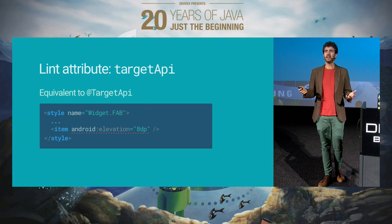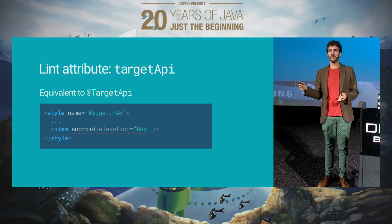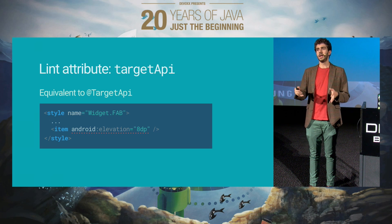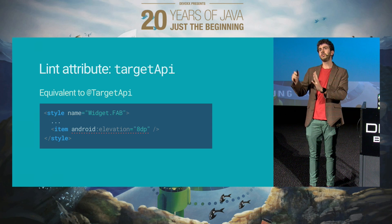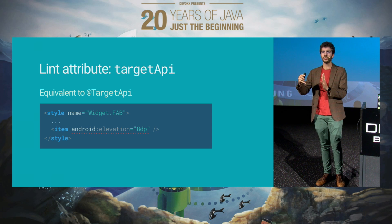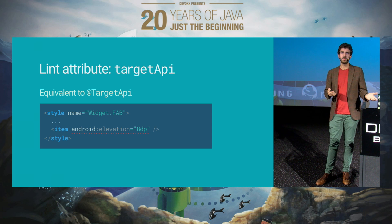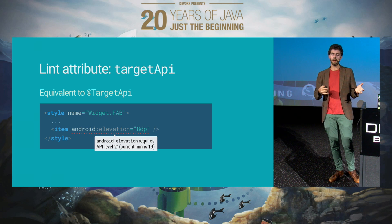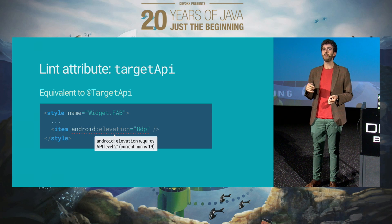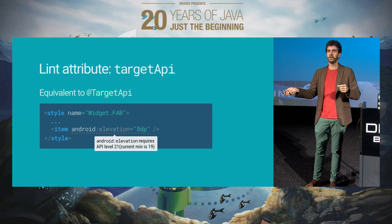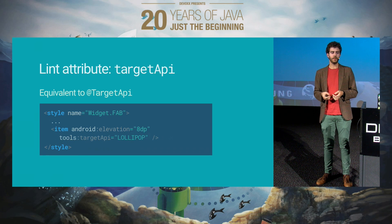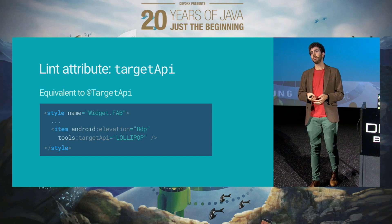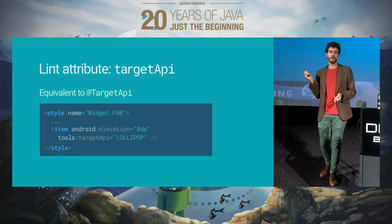The next one is basically the same thing as the counterpart in Java, which is the targetApi attribute. What this means is: what I'm writing here is meant to be run on a specific platform version and newer. For example, if we have elevation and the minimum SDK version is earlier than Lollipop, it would show up in red unless you put it in the v21 folder. If you put the targetApi annotation, it means: I know this is not going to work before Lollipop, I don't care, it's fine — and in this case, this would just do the trick.